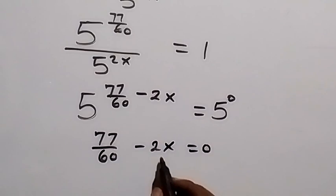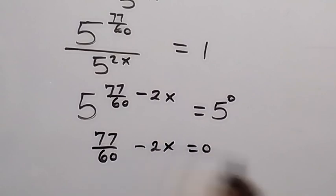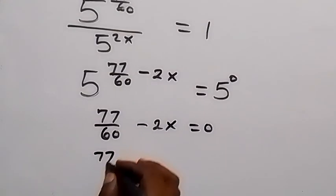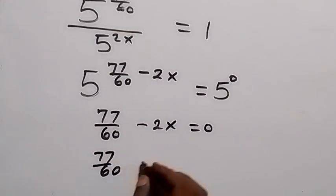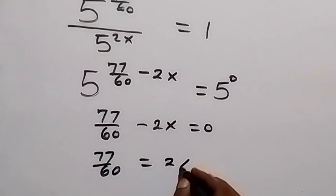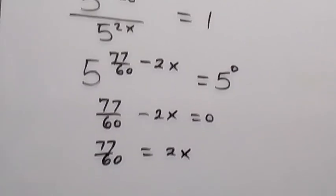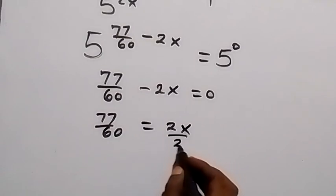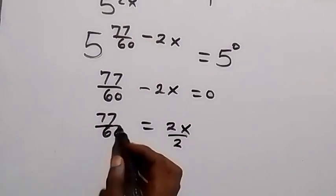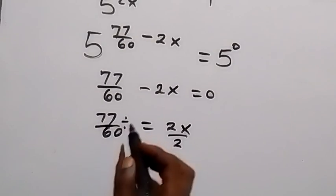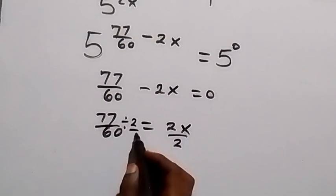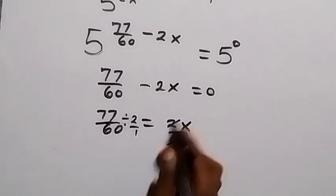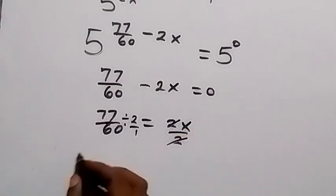Since both sides are equal, we equate the powers: 77/60 minus 2x equals 0. From here we take minus 2x to the other side, so it becomes positive: 77/60 equals 2x. Now we divide both sides by 2.